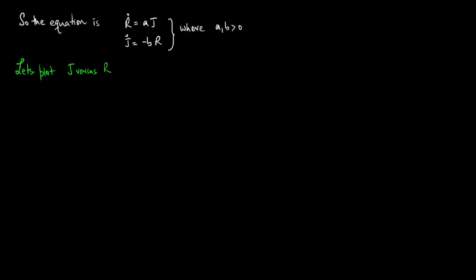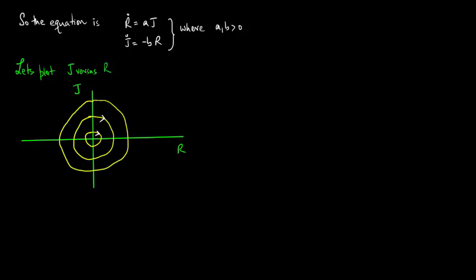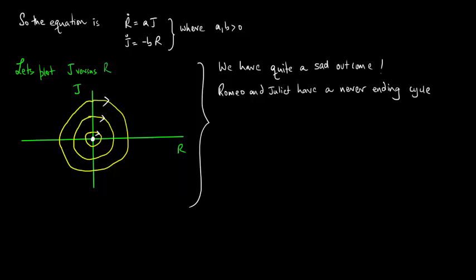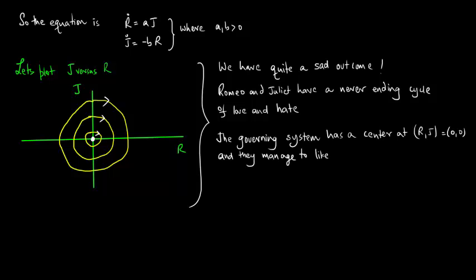So let's plot j versus r. When we plot j versus r, we find that we get a bunch of closed orbits. So we have quite a sad outcome. Because of the closed orbits, Romeo and Juliet have a never-ending cycle of love and hate. The governing system has a center at (r,j) equals (0,0), and they manage to like each other about one quarter of the time.